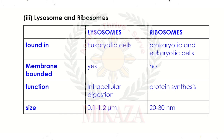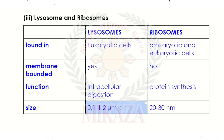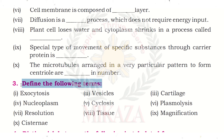The last differentiation is lysosomes versus ribosomes. Lysosomes are found in eukaryotic cells, while ribosomes are found in both prokaryotic and eukaryotic cells. Lysosomes have a membrane covering, while ribosomes do not. The function of lysosomes is to digest materials within the cell, while ribosomes produce proteins.